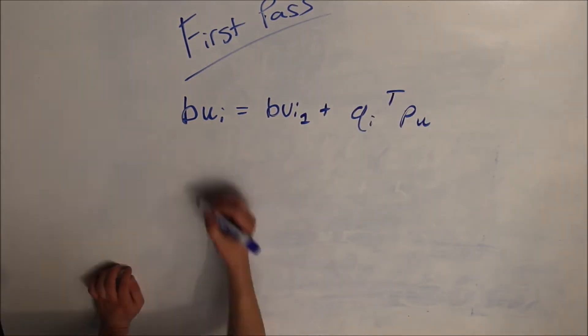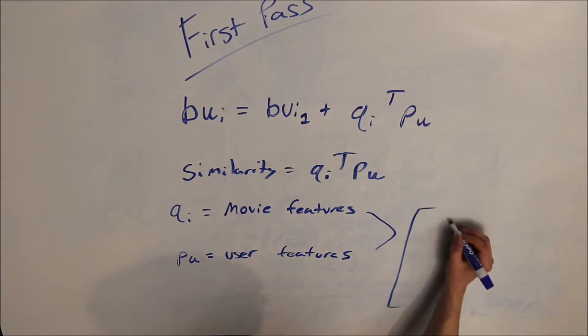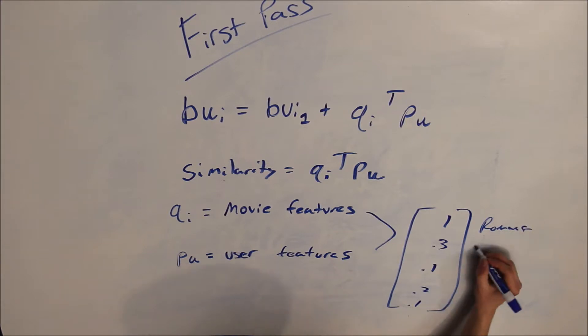BUI now also takes into account what the user likes and how it's similar to features in various movies. The similarity portion is QI transpose times PU, with QI being movie features and PU being user features. You can see a quick example of what we will be using for this on the bottom right corner now.